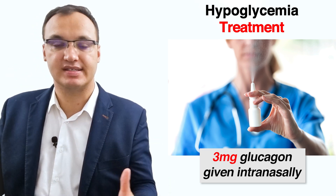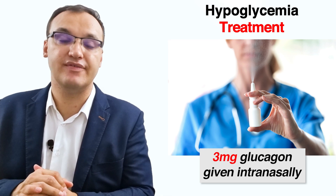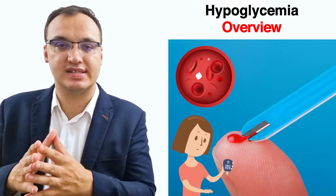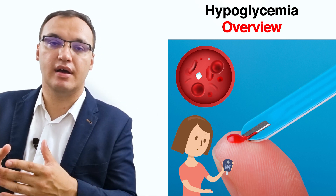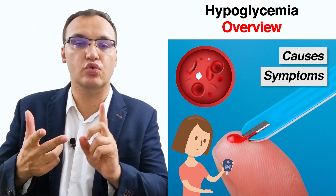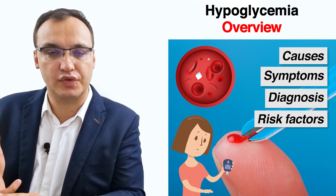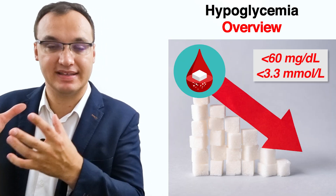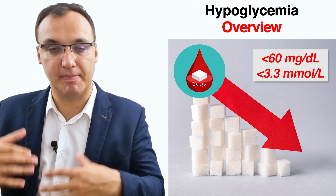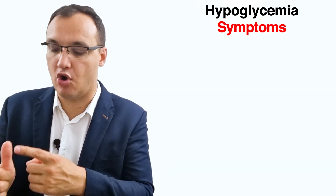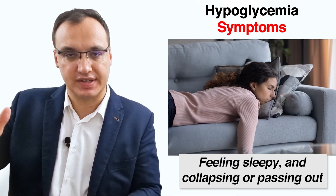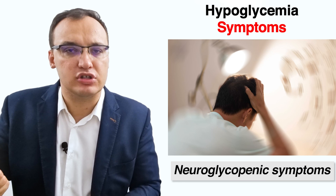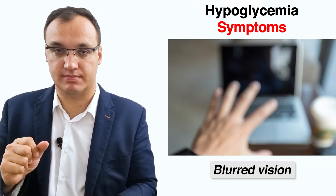To recap: hypoglycemia has many causes and many symptoms. Hypoglycemia is a state of having a blood glucose level that is too low to effectively fuel the body's cells. Symptoms include hunger, shakiness, dizziness, confusion, difficulty speaking, feeling anxious, feeling weak, and more severe ones such as difficulty paying attention, confusion, and blurred vision.